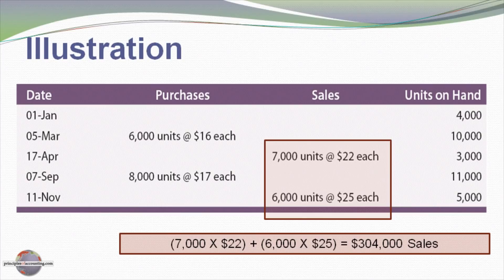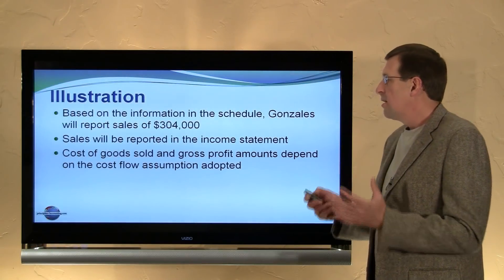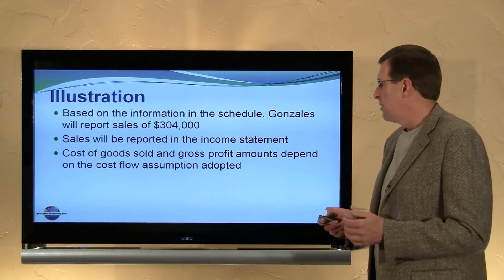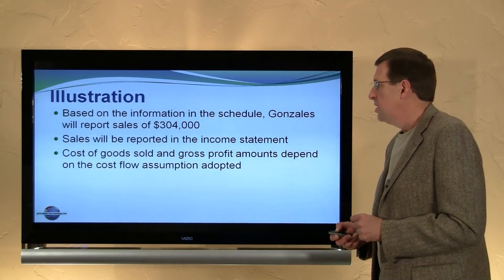No matter what costing method we used — FIFO, LIFO, or weighted average — we're going to find that our total sales are $304,000. That is, we sold 7,000 units at $22 and 6,000 units at $25 each, giving us total sales of $304,000. Sales are reported in the income statement. Cost of goods sold and gross profit amounts are going to depend on the cost flow assumption used by the company.